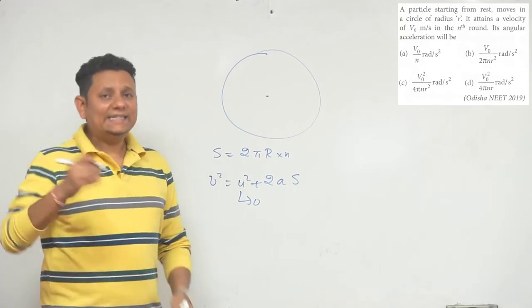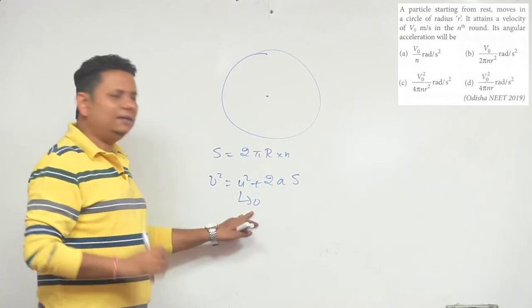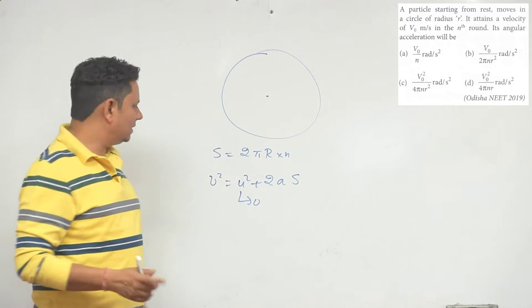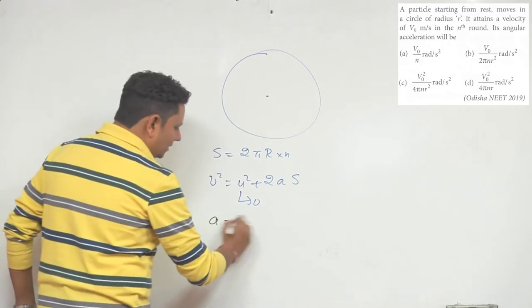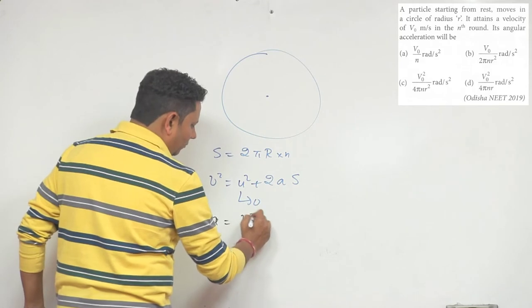The particle is given at rest, which we can easily assume. On this basis, we can say that acceleration a will be equal to v0² divided by 2s.